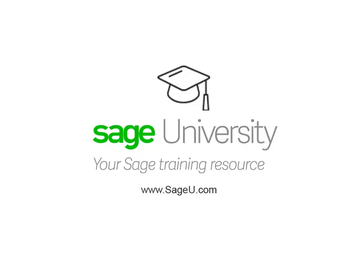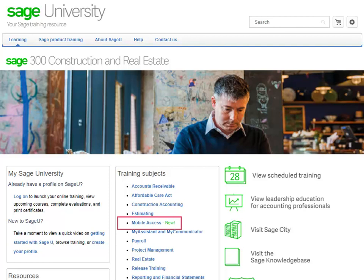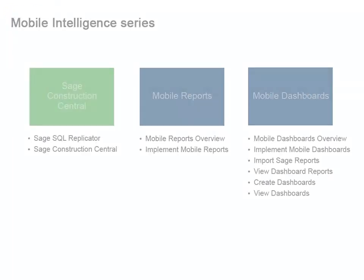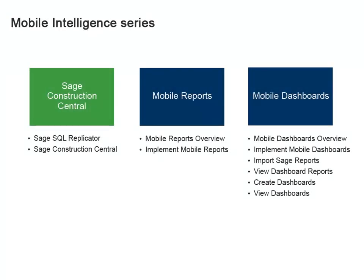Want to learn more about going mobile? Check out Sage University. On the Sage 300 Construction and Real Estate homepage, you'll find a collection of complimentary instructional videos on mobile access. The Mobile Intelligence series covers how to set up your Sage Construction Central website and how to set up and use mobile reports and mobile dashboards.